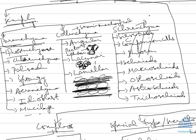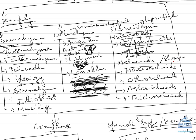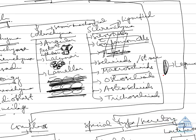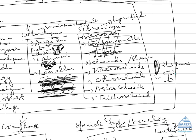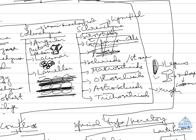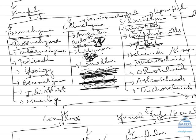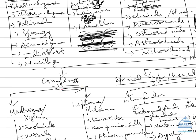Sclerenchyma cells are completely lignified dead cells with deposition of lignin. The first type is sclerites, also known as stone cells, which are completely lignified — for example, the grit found in guava. Macrosclerites are large sclerites found in legumes. Osteosclerites are bone-shaped and found in the endocarp of coconut. Xerosclerites are found in xerophytes, and trichosclerites are found in hydrophytes.